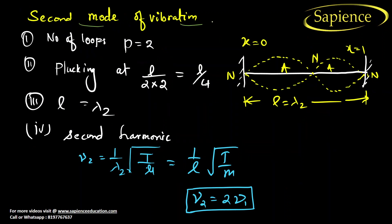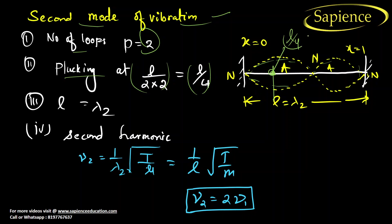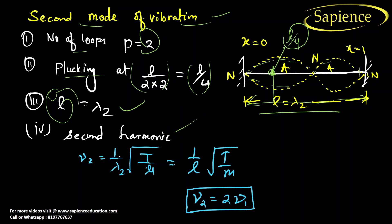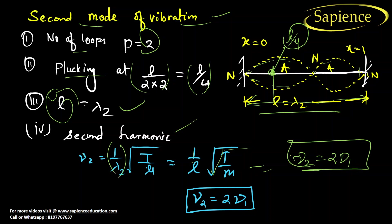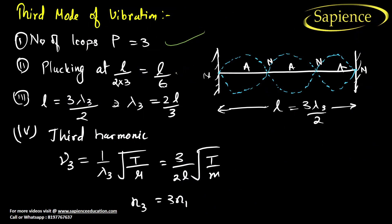For the second mode of vibration, number of loops = 2, so the plucking point is L/(2×2) = L/4. With two loops, the total length equals lambda, so lambda₂ = L. The second harmonic frequency is: f₂ = (1/lambda₂) × root(T/mu) = (1/L) × root(T/mu), which is exactly 2 times the fundamental frequency.